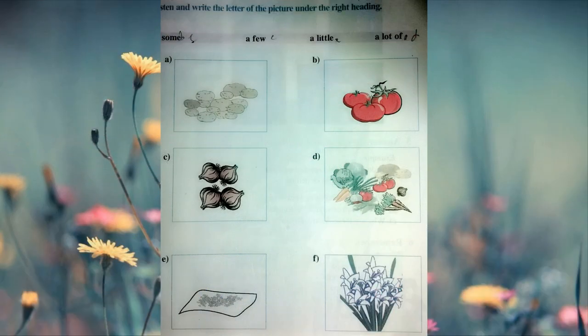Activity three: Listen and write the letter of the picture under the right heading. A) There are a lot of potatoes. B) There are some tomatoes. C) There are a lot of onions. D) There are a few vegetables.